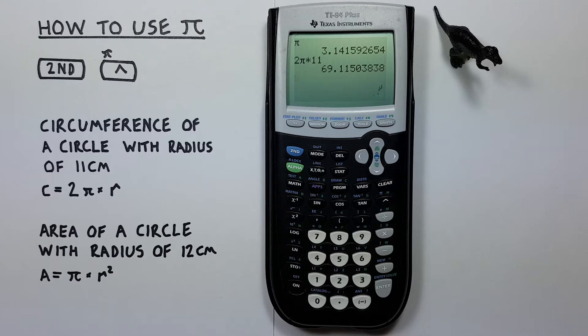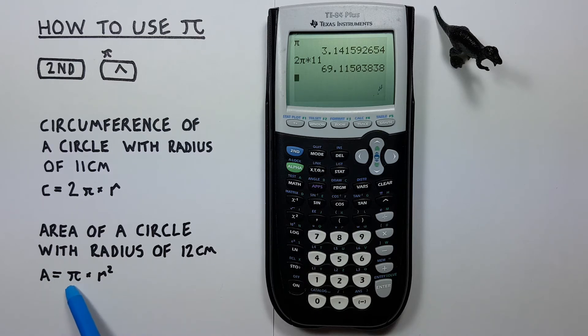PI is also helpful when finding the area of a circle. For example a circle with a radius of 12 centimeters. We would use this formula here. PI times R squared.